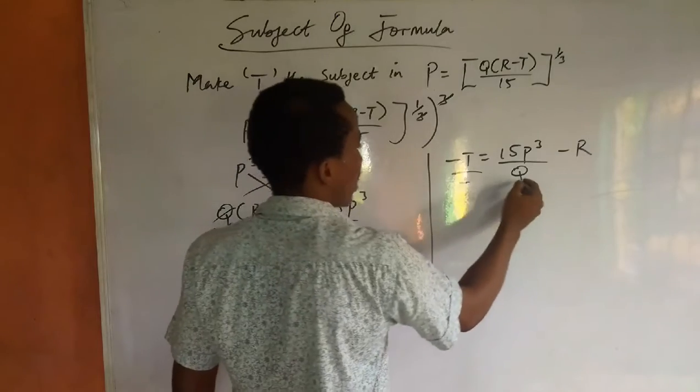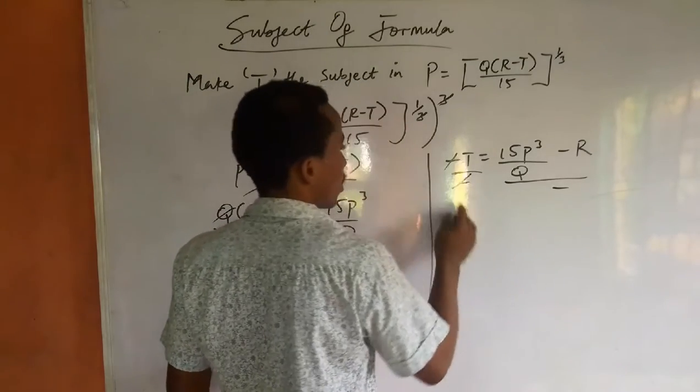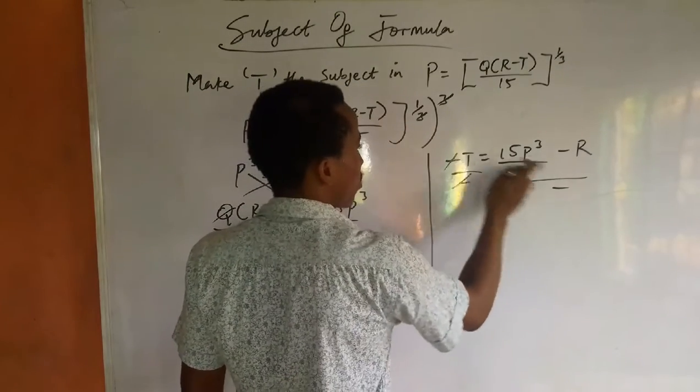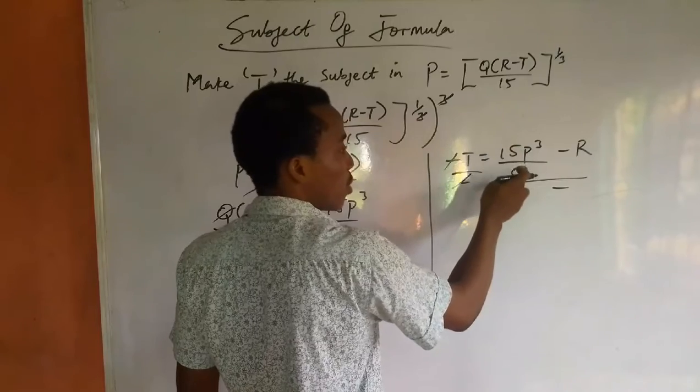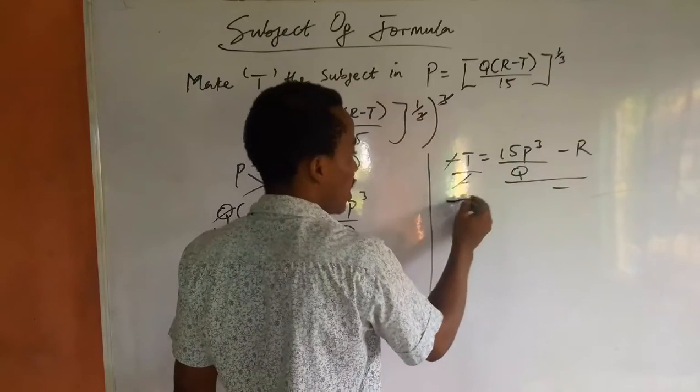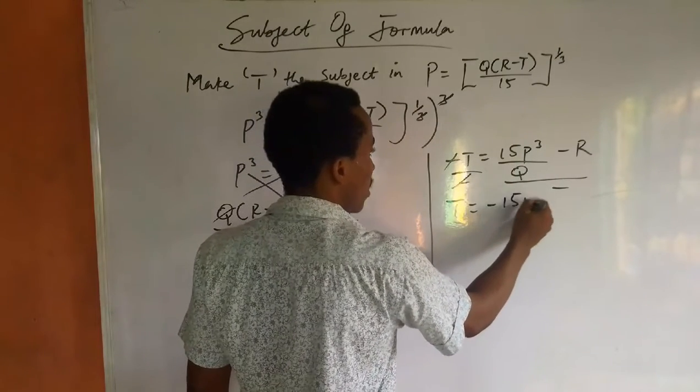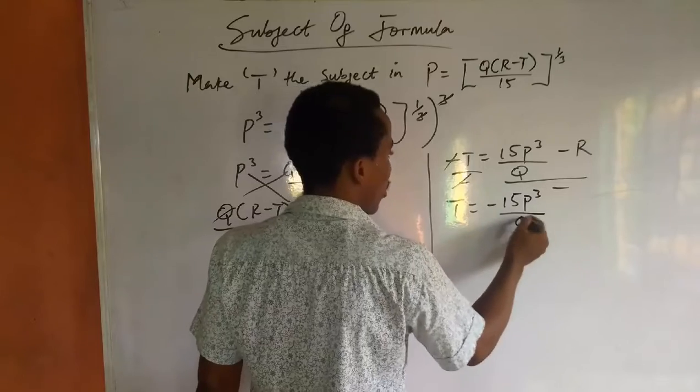So the next thing we do is divide both sides by negative one. When the negatives cancel, 15P³/Q becomes negative, so t = -15P³/Q + R.